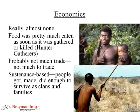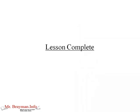Finally, economics: there are almost no economics at this time period. Food is pretty much eaten as soon as it's gathered or killed — that's why we call these people hunter-gatherers, a key vocabulary term for your notes. They hunted or gathered it and ate it right away, maybe storing it for a little while but not much. There's probably not much trade because there's not much to trade — maybe one tribe is better at making spears and trades a little bit. Most of this is sustenance-based: people got, made, and did just enough to survive as clans and families. That gives you a good, clear overview of the Paleolithic period, the big SPICE overview of prehistory and early humans.